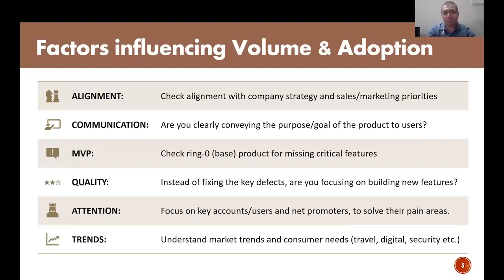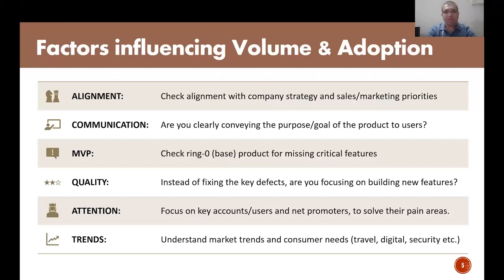The next point is MVP. If you are launching a new product or if it is already launched and volume is not coming up, check whether all the critical, most important functionality is included in the core product. If it's missing some core areas, please plan to develop it. If it is already there, check whether those are working properly. If there are quality problems or defects in the backlog for your core areas, your volume will not pick up. Instead of developing new features, fix the core defects first because that will help you.